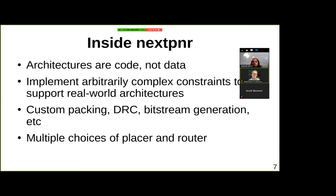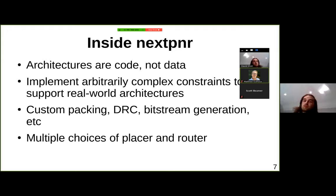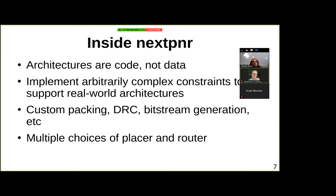We also have multiple choices of placer and router algorithm. In theory an architecture could provide its own placer and router, usually only used for small specific parts like global clock routing, but if you had something that wasn't an FPGA at all you could use NextPNR as a structure to provide your own placer and router. Generally the included placer and router would be used for the bulk of placement and routing for a typical FPGA.